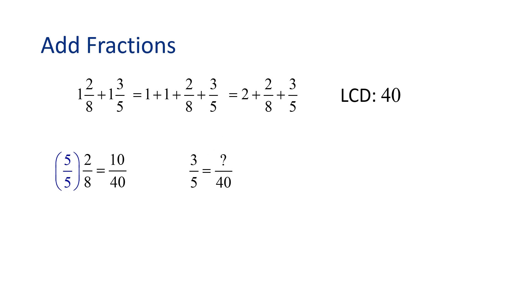Now let's look at 3 5ths. We know that 5 times 8 is 40, so we will multiply 3 5ths by 8 over 8. 8 times 3 equals 24, and 8 times 5 is 40. Therefore, 3 5ths and 24 40ths are equivalent fractions.